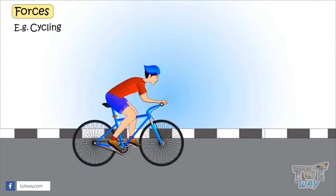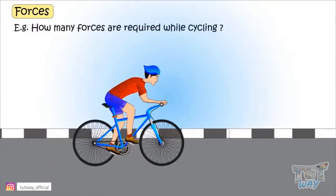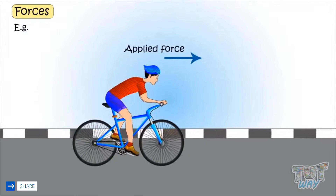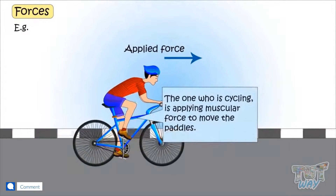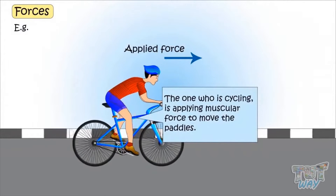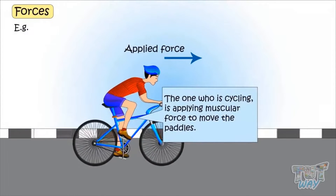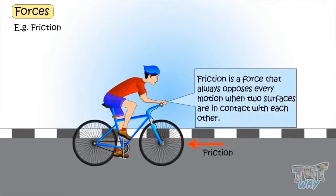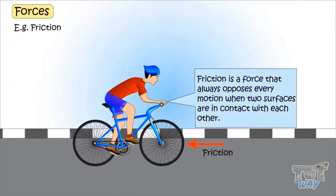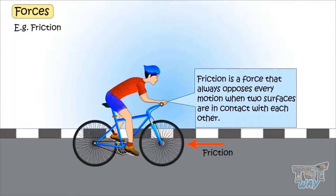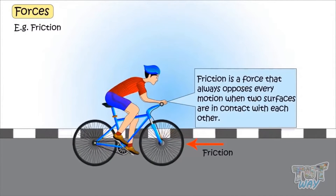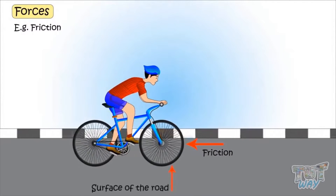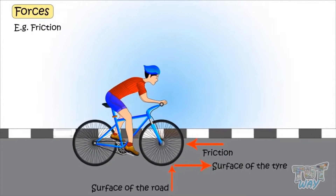Cycling — let's see how many forces are required while cycling. First is the applied force: the one who is cycling is applying muscular force to move the paddles. Then there is friction, a force that always opposes any motion when two surfaces are in contact with each other. Here, the friction force is between the surface of the road and the surface of the tires.